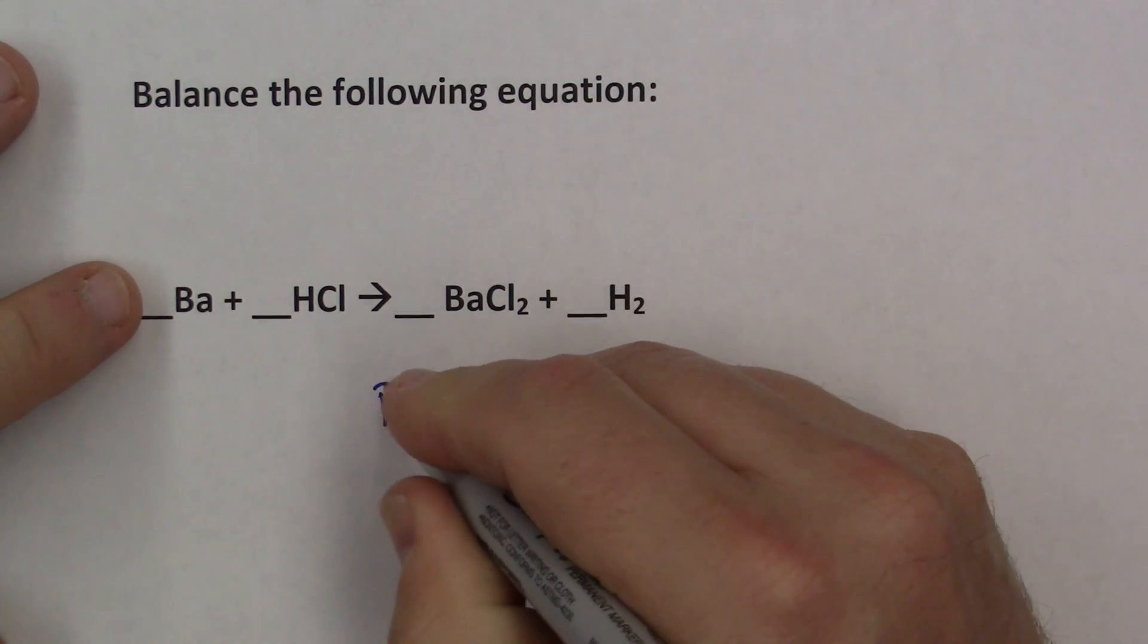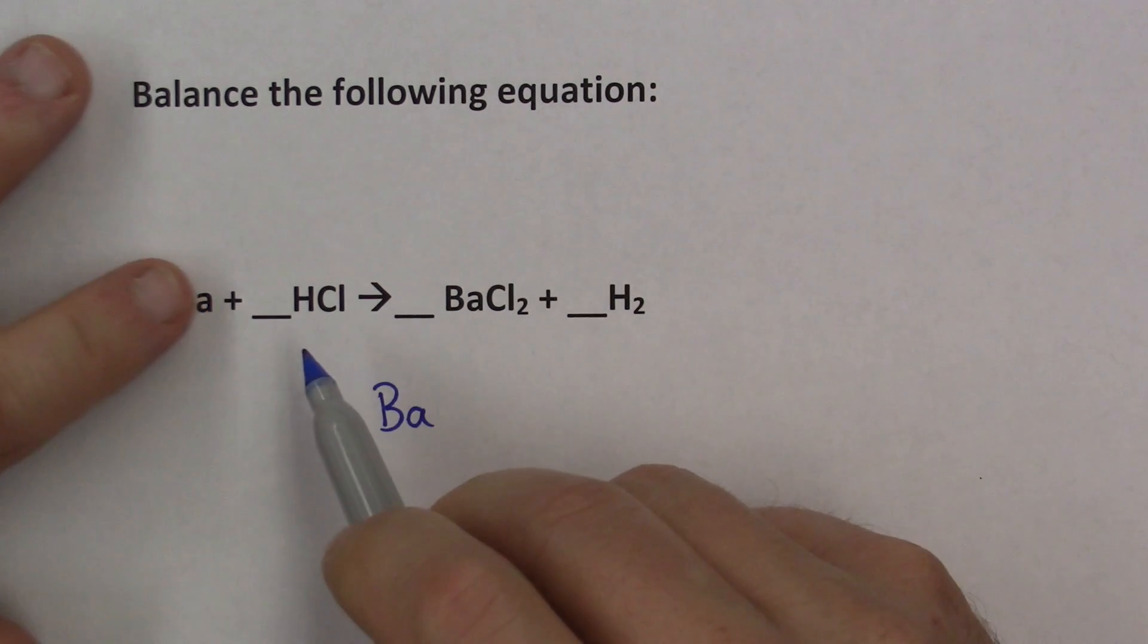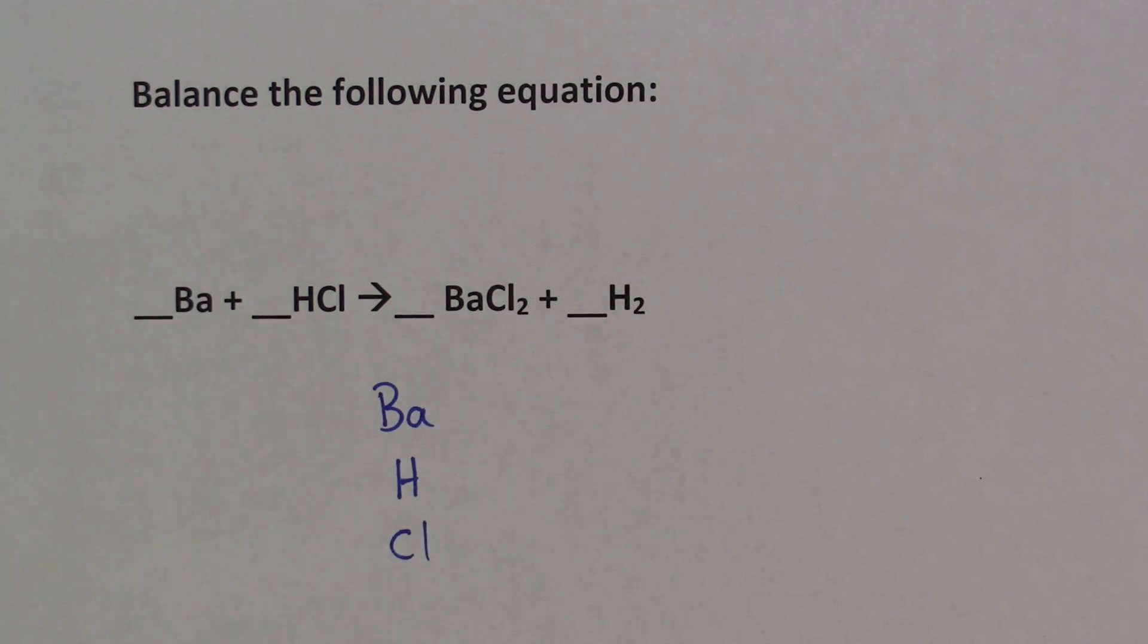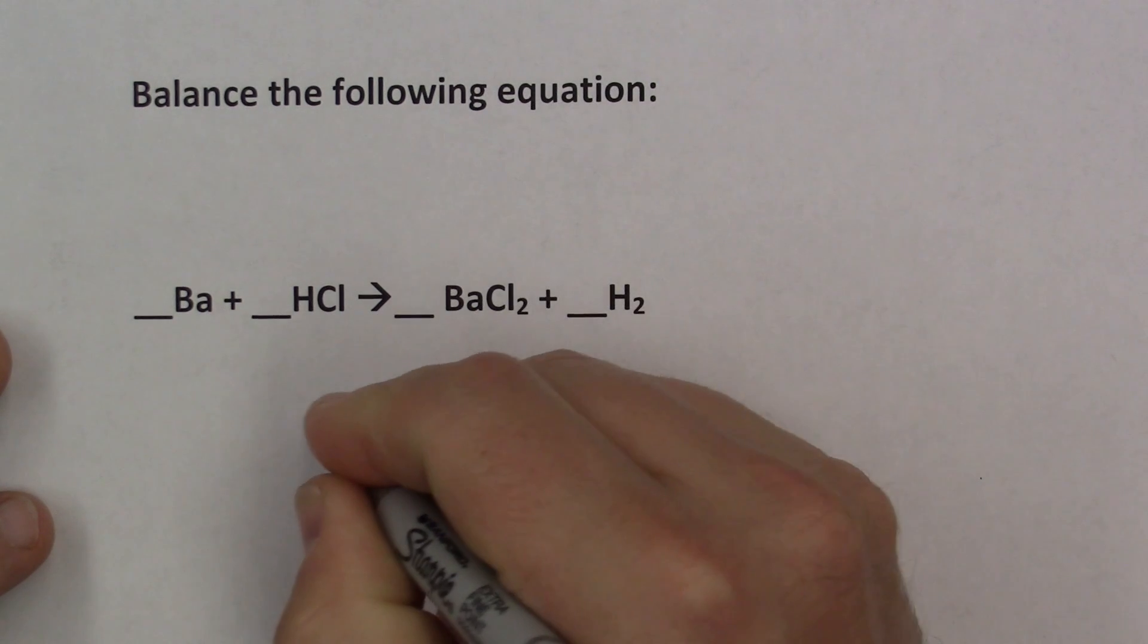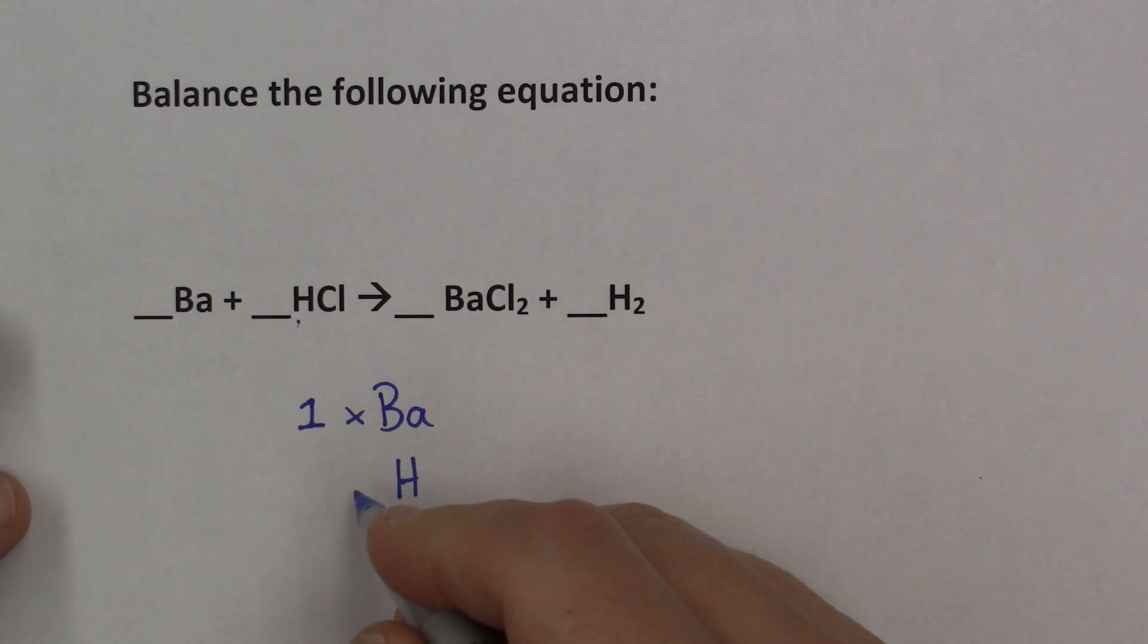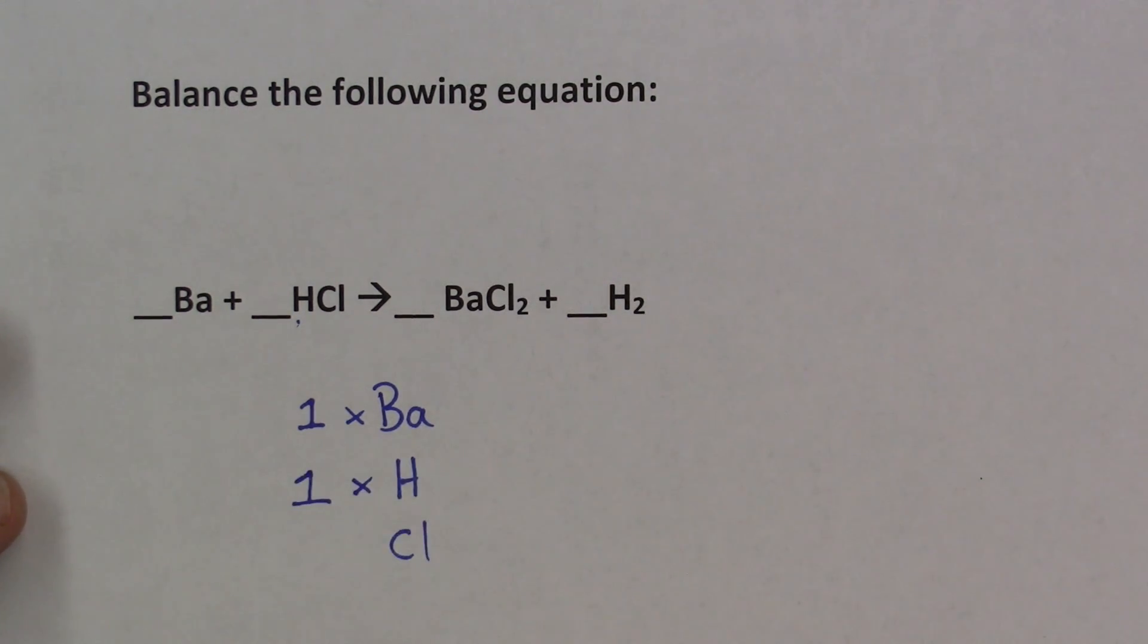Now, what I tell students to do is go ahead and just make a list of the atoms that are involved in the equation. So here we have a barium, let's just write Ba. Here we have a hydrogen, so let's just write hydrogen underneath that, and chlorine underneath that. So I just made a small list of the types of atoms I'm dealing with, and then count. Well, over here right now, we have 1 barium on the left, so times 1 times Ba. We have 1 hydrogen, 1 times hydrogen. We have 1 chlorine, so we write 1 times chlorine.